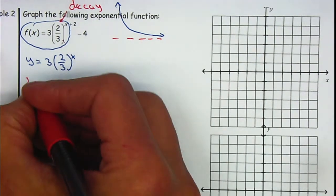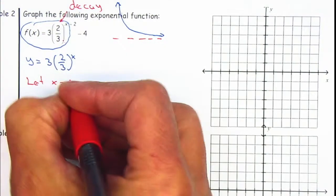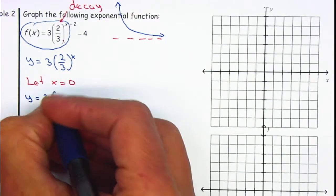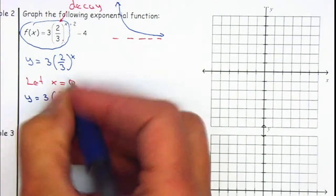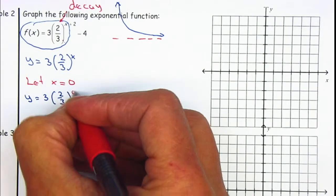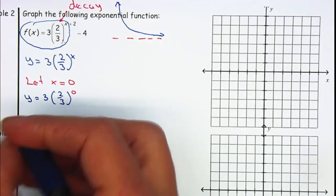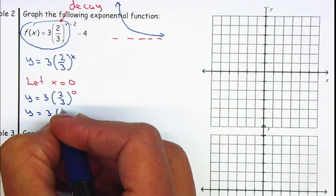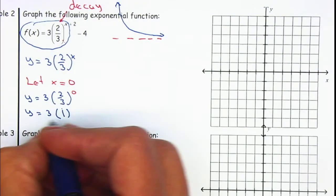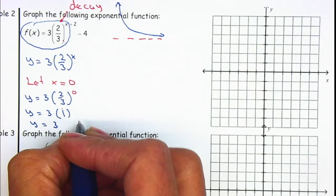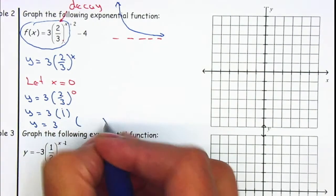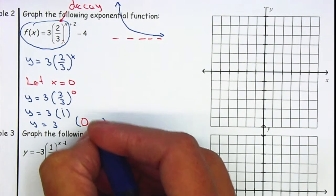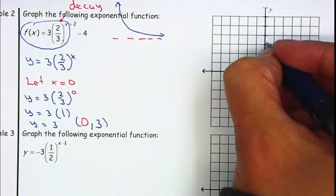Let's go and let x equal to zero, same as before. So it will be y is equal to three times two-thirds to the zero. That will be y is equal to three times one — two-thirds to the zero is one. So y is equal to three. So my first point: if x is zero, y is three.